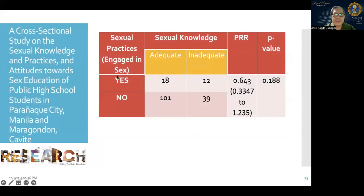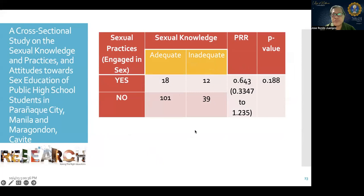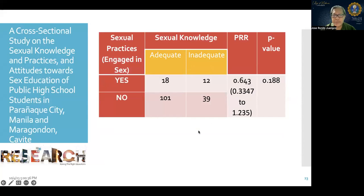Here is another example comparing sexual practices and sexual knowledge. There is a negative association as seen on the prevalence rate ratio, meaning those with inadequate knowledge engage more in sexual practices. However, the result is not statistically significant because the p-value is greater than 0.05.